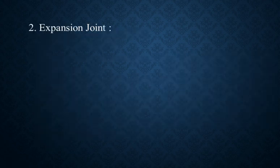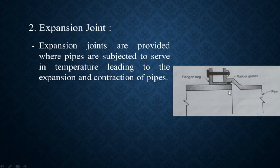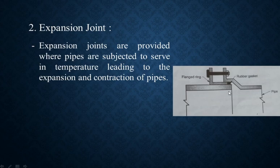Number 2 — expansion joint for cast iron pipes. Expansion joints are provided where pipes are subjected to varying temperatures, leading to expansion and contraction. If temperature increases, the pipe expands; if temperature decreases, the pipe contracts. This repeated expansion and contraction can damage the pipe, and the expansion joint helps to stop this damage.